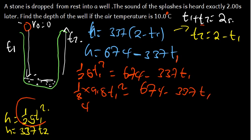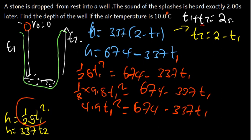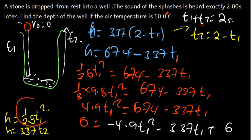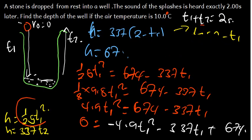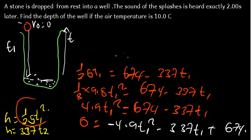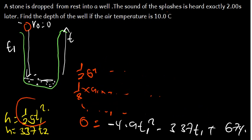Simplifying, 4.9 T1 squared equals 674 minus 337 T1. Rearranging to one side gives: negative 4.9 T1 squared minus 337 T1 plus 674 equals zero. We now have a quadratic equation to solve for T1.